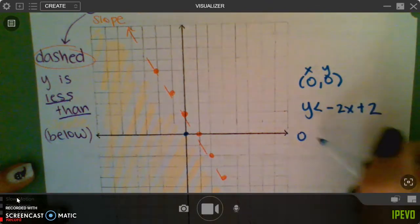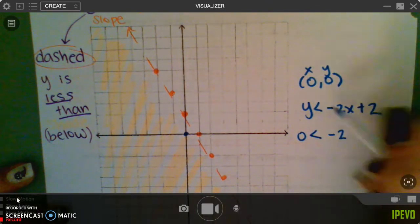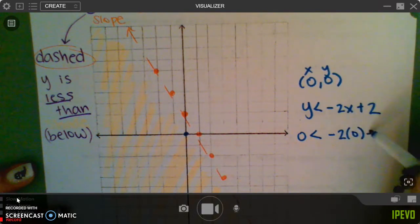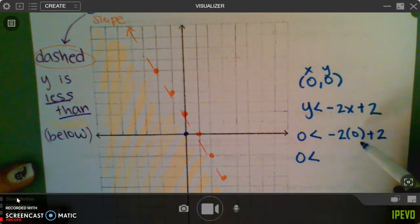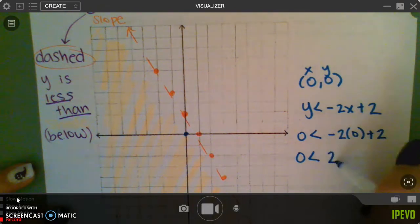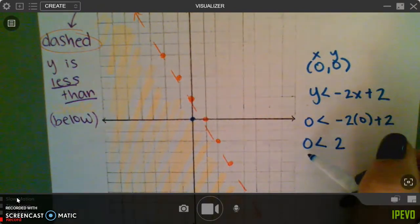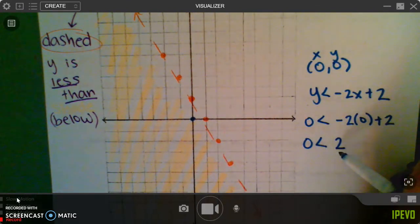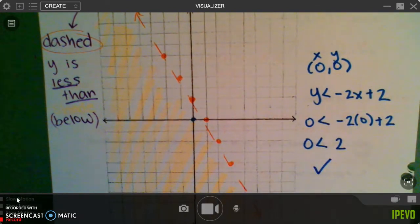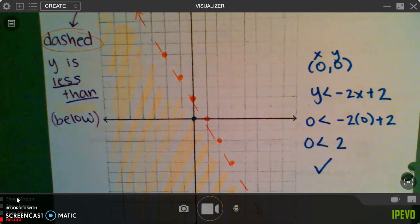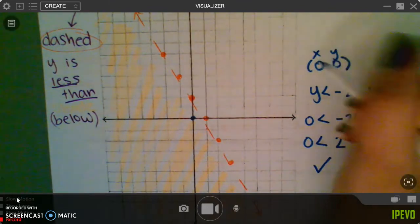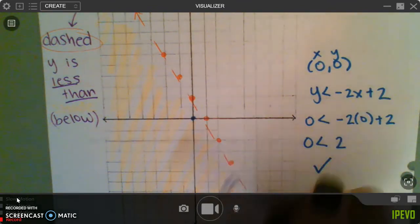So zero, less than, negative two, x, but our x is zero, plus two. Zero is less than. Again, negative two times zero is zero, zero plus two is two. So then you ask yourself, is zero less than two? Yes, it is, which means this, wherever this point is, is where I should have shaded. Did I? Yes, I did.